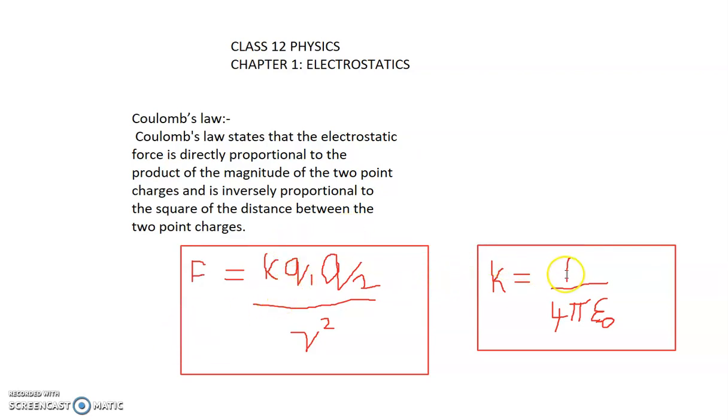K equals 1 over 4 pi epsilon naught. Epsilon naught is called the permittivity in free space.